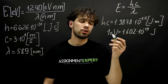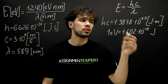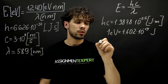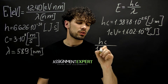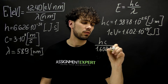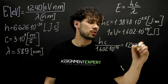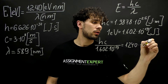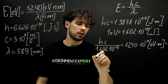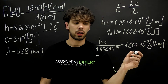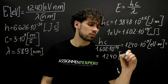So if we want to find the energy in electron volts, we need to divide the result of the energy in joules by this expression. And now we can divide this expression by this one. hc over 1.602 times 10 raised to the negative 19th gives us 1240 times 10 raised to the negative 9th power. And now we can get rid of 10 raised to the negative 9th power to get 1240 electron volts times nanometers.